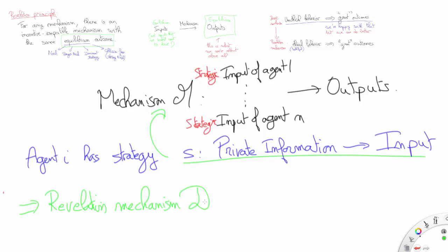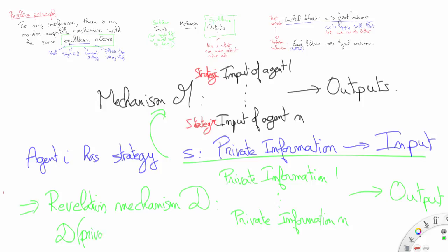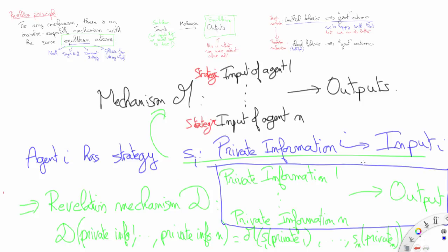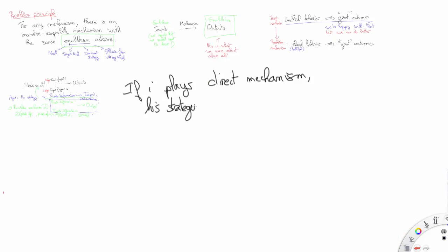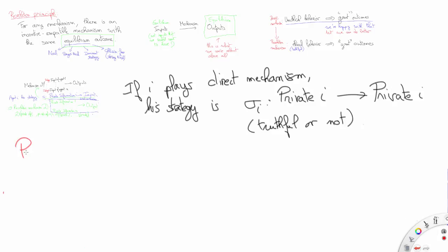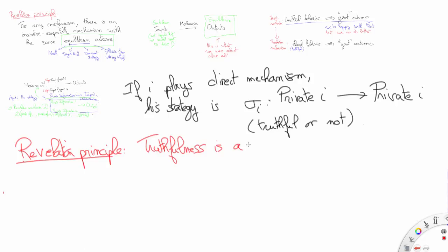This allows us to construct a revelation mechanism that takes into account agents' private information and outputs the equilibrium outcomes. Note that the revelation mechanism then becomes a direct mechanism — that is, a mechanism whose inputs are private information. An agent's strategy for such direct mechanisms is then a way of revealing private information, which may be done truthfully or not. Now the revelation principle, which once again is actually a theorem, claims that truthfulness will be an equilibrium for the revelation mechanism.